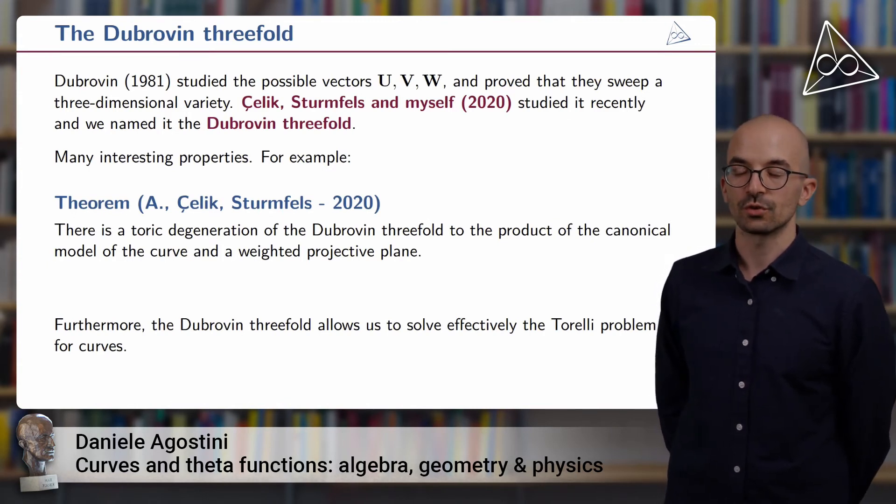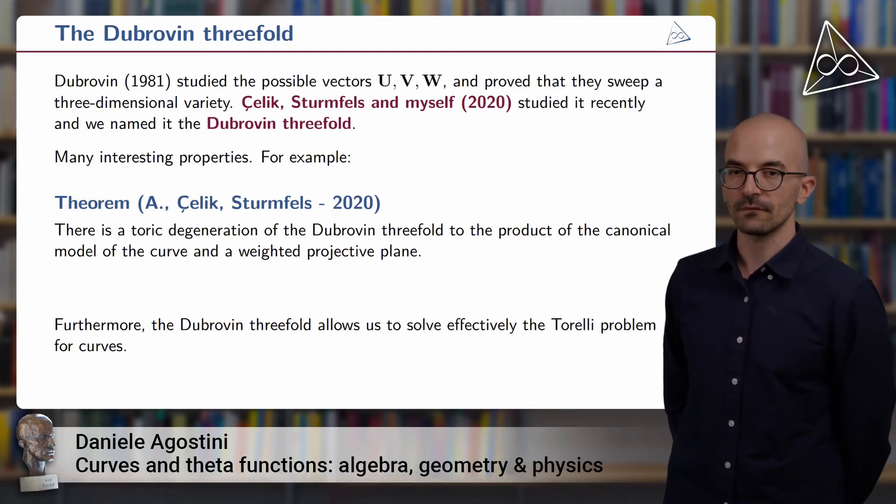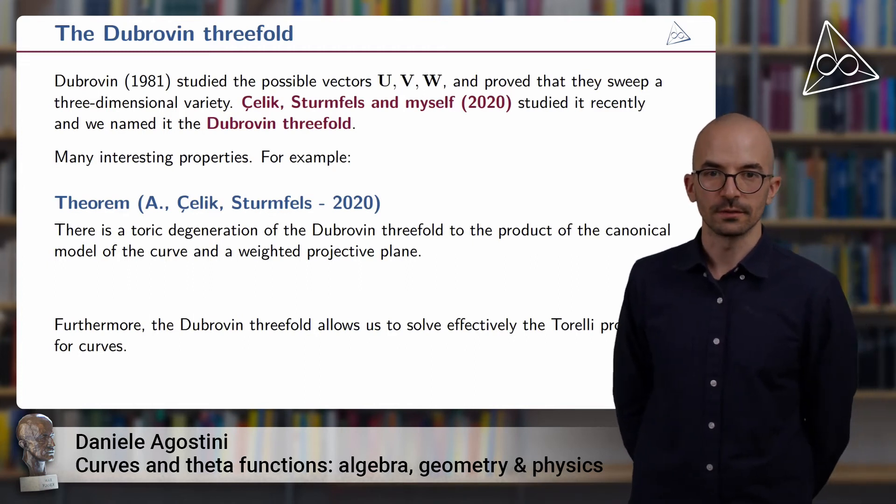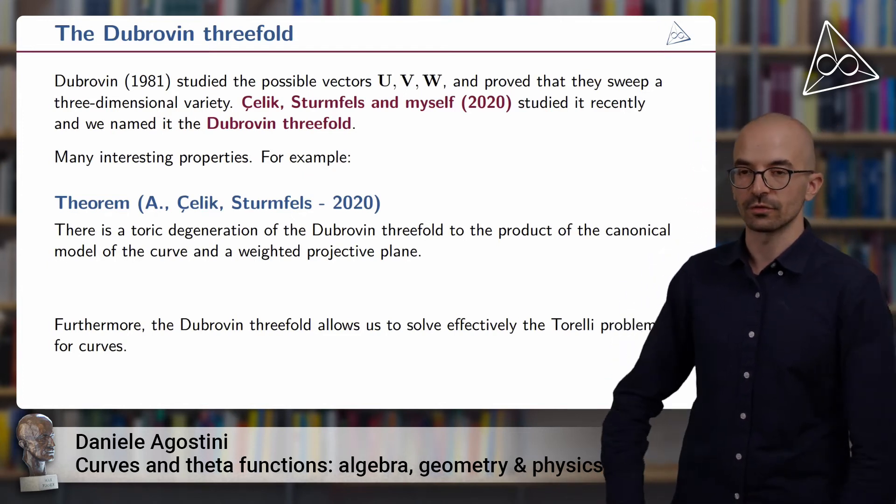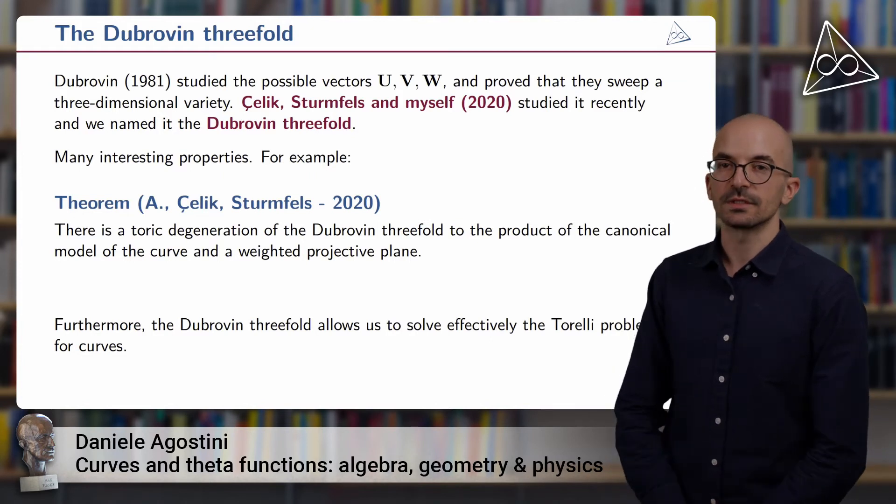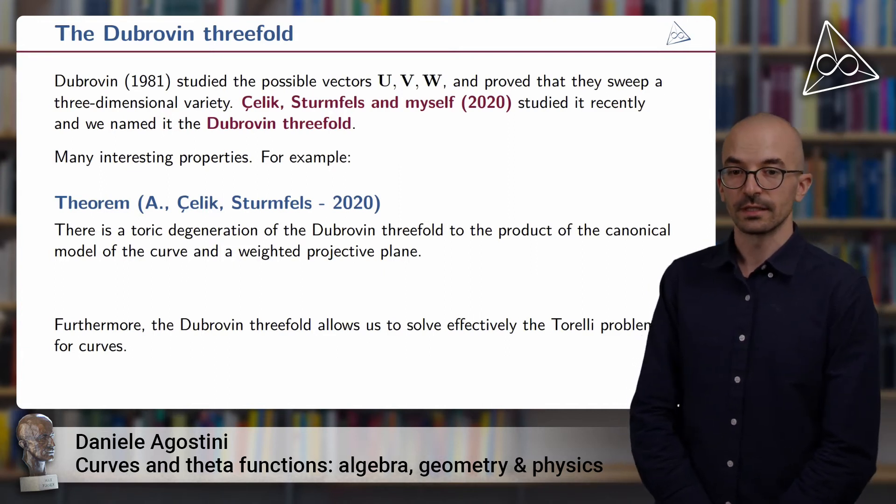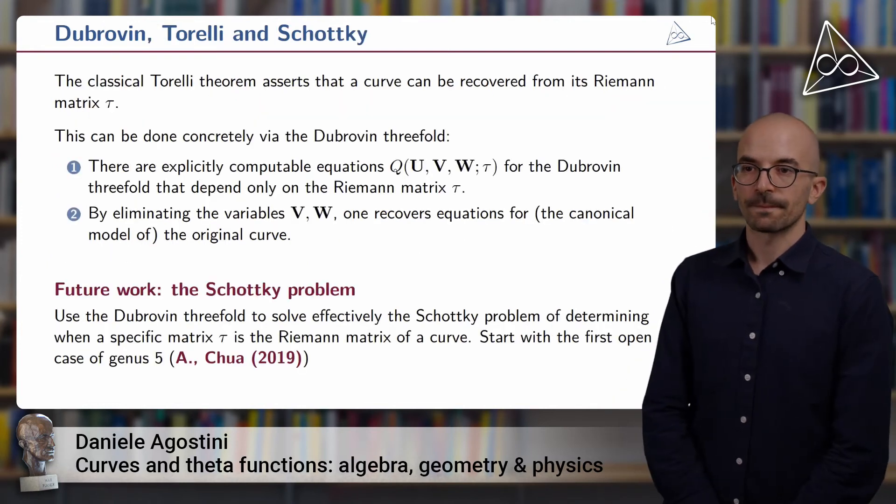Then we studied some of its interesting properties. For example, we showed that there exists an explicit toric degeneration of the Dubrovin threefold to a product of the canonical curve that we started from with a certain weighted projective plane. With such a degeneration, it's very easy to compute many interesting algebraic geometric objects or properties of the Dubrovin threefold. Something else that was already observed by Dubrovin himself is that the Dubrovin threefold allows to solve effectively the Torelli problem for curves.